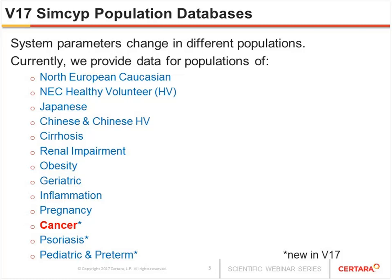In disease states, routes of elimination are often inhibited and this can affect dosage regimens in disease subjects. In pediatric populations, for example, there are age-dependent changes which affect dosage across different age groups. In version 17, we've introduced three different populations: a preterm population, a psoriasis population, and the cancer population.